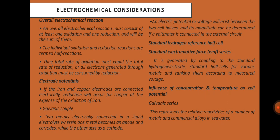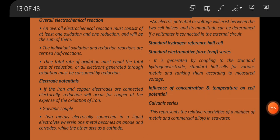The overall electrochemical reaction must consist of at least one oxidation and one reduction, and will be the sum of them. The individual oxidation and reduction reactions are termed half-reactions. The total rate of oxidation must equal the total rate of reduction, or all electrons generated through oxidation must be consumed by reduction.